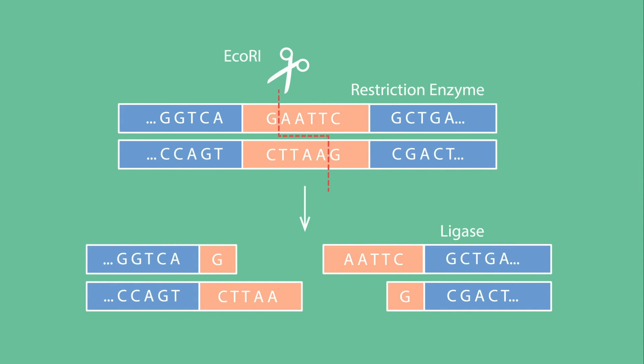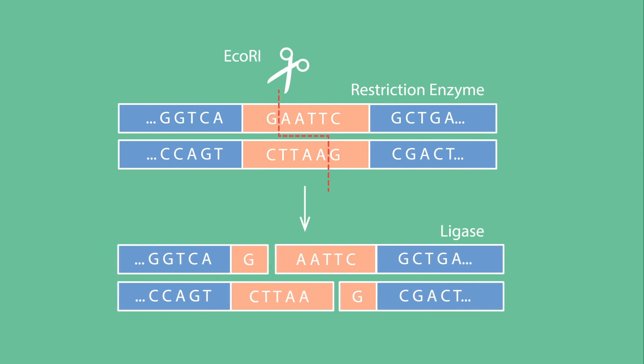Cloning with restriction enzymes is made possible by the enzyme DNA ligase. The role of DNA ligase in biology is the repair of gaps in DNA. In the lab, purified DNA ligase is used to covalently rejoin the ends of DNA together. To learn more about molecular cloning, visit snapgene.com.